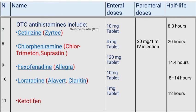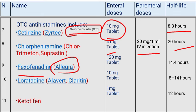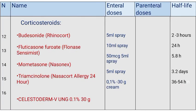OTC antihistamines include: cetirizine (Zyrtec), enteral doses 10 mg tablets, half-life ~8.3 hours. Chlorpheniramine (trade name Chlor-Trimeton/Suprastin), enteral doses 4 mg tablet, parenteral doses 20 mg per 1 ml intravenous injection, half-life ~20 hours. Fexofenadine (trade name Allegra), enteral doses 120 mg tablet, half-life ~14.4 hours. Loratadine (trade name Alavert/Claritin), enteral doses 100 mg tablet, half-life 8–14 hours. Ketotifen, enteral doses 1 mg tablet, half-life ~12 hours.